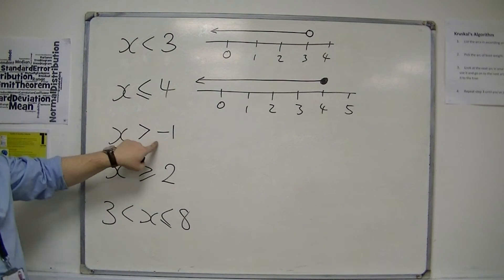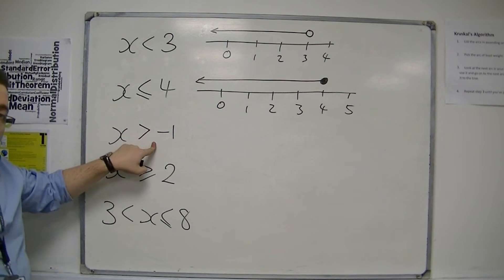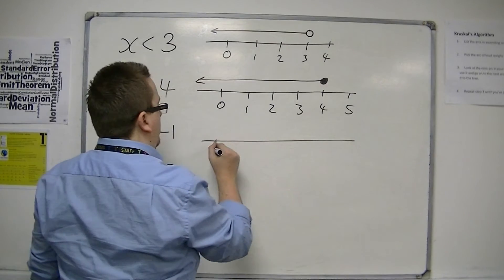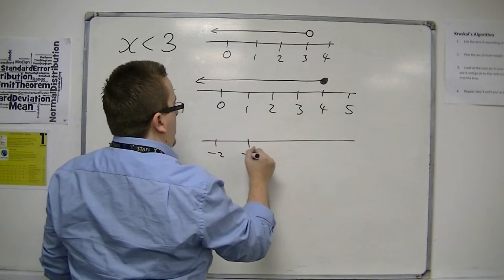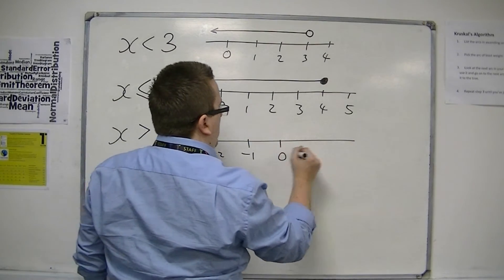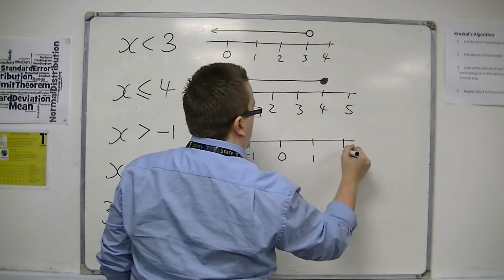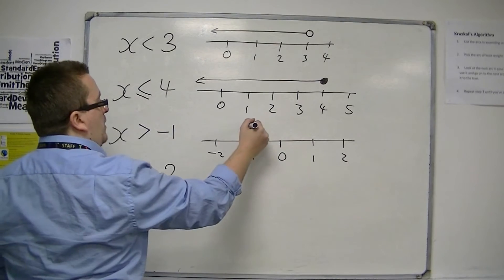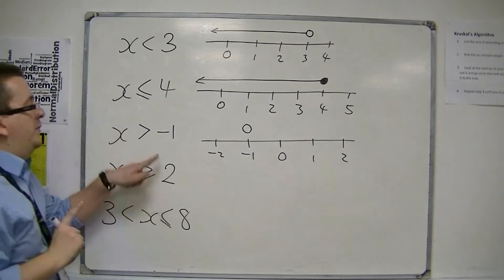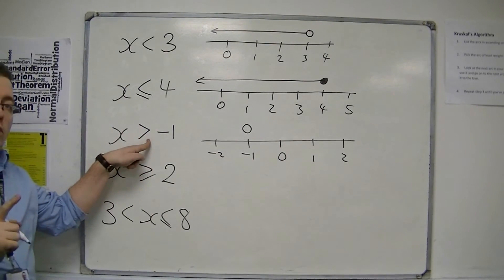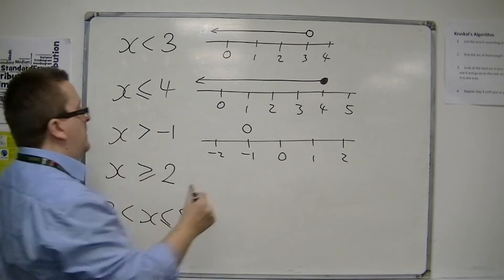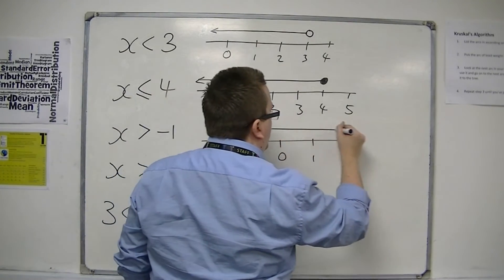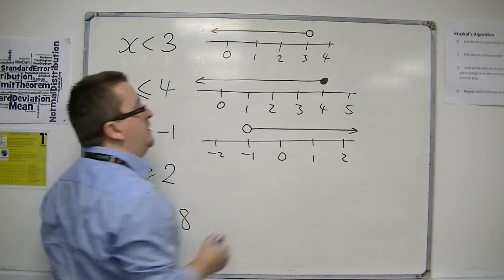So if I'm going the other way — if x is greater than minus 1 — here's my number line. At minus 1 I'm going to use a hollow dot because there's no equality here. And because I want x to be greater than it, I'm moving to the right.